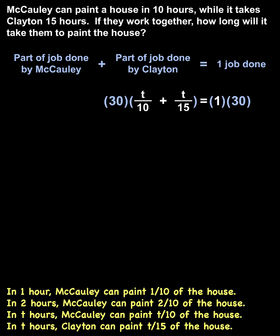Distributing on the left side, 30 times t over 10 is 30t over 10, which simplifies to 3t. And 30 times positive t over 15 is positive 30t over 15, which simplifies to positive 2t. And on the right, 1 times 30 is 30.